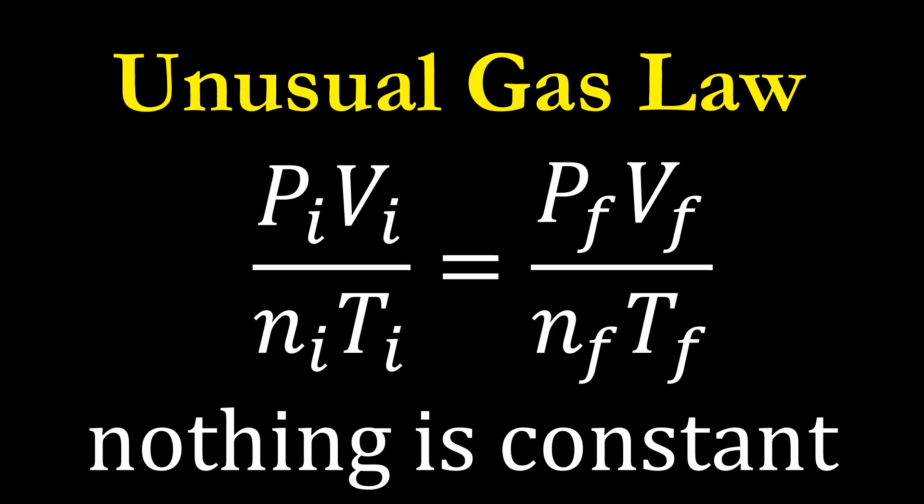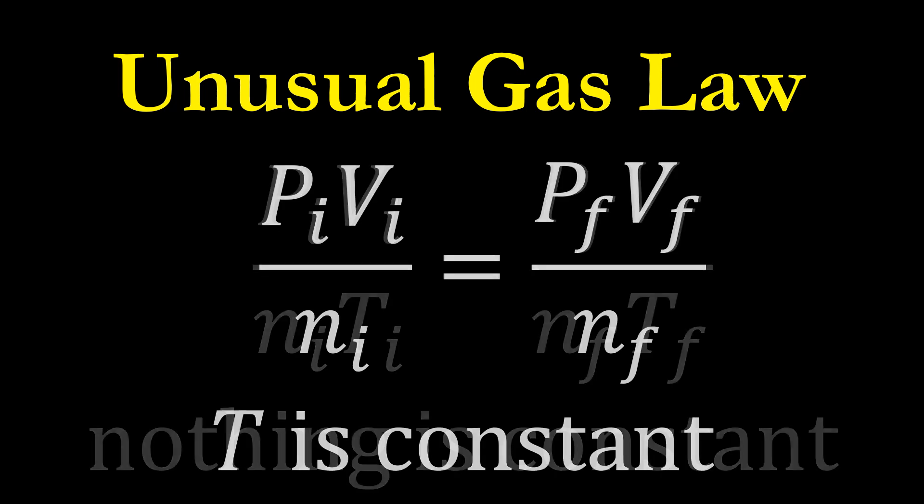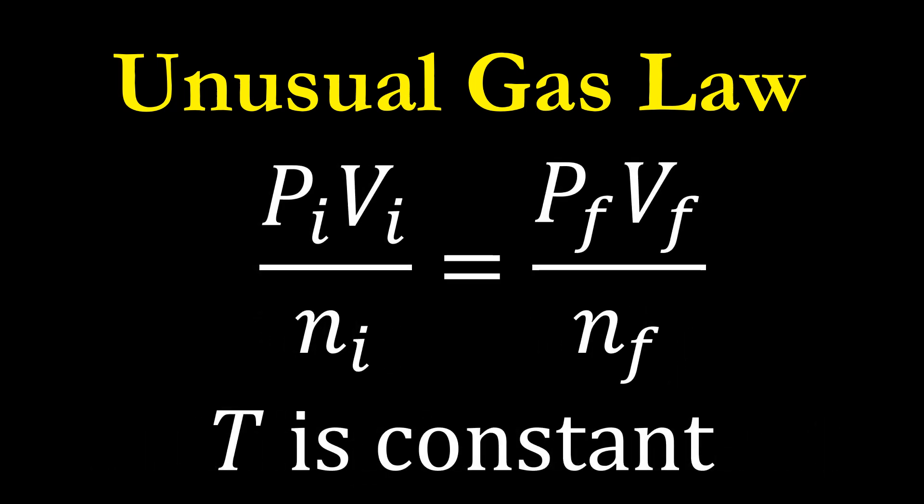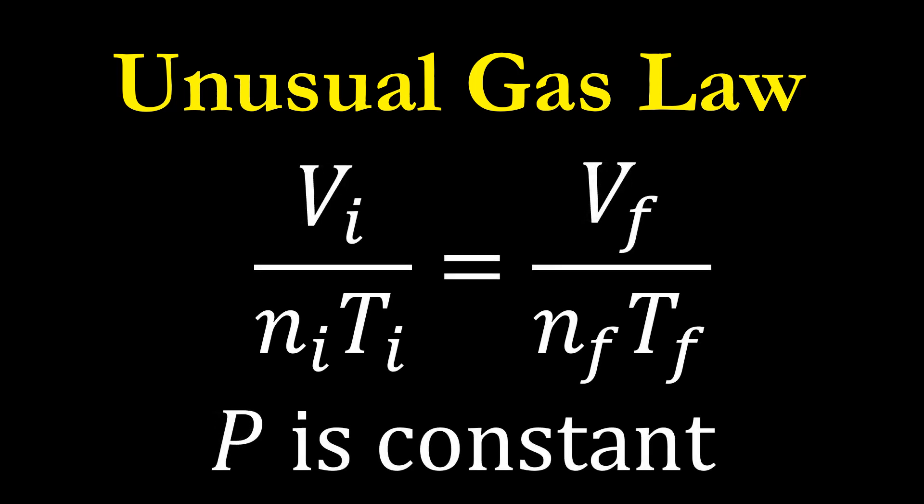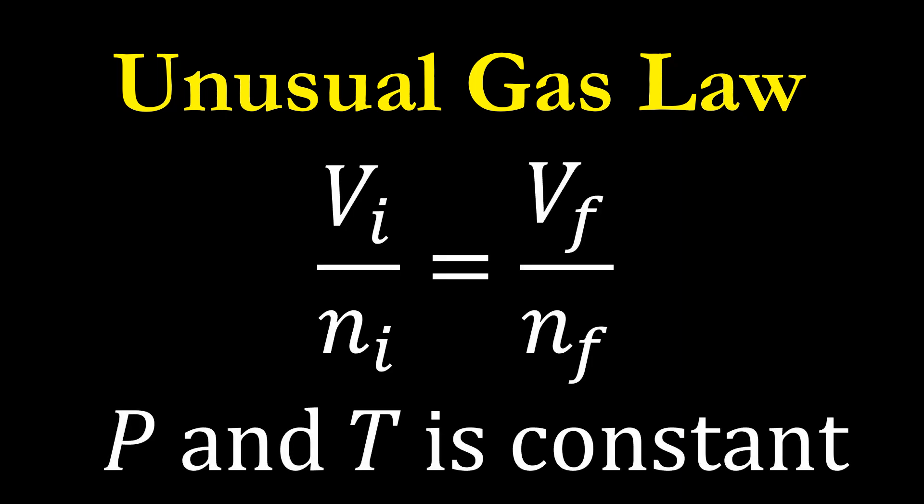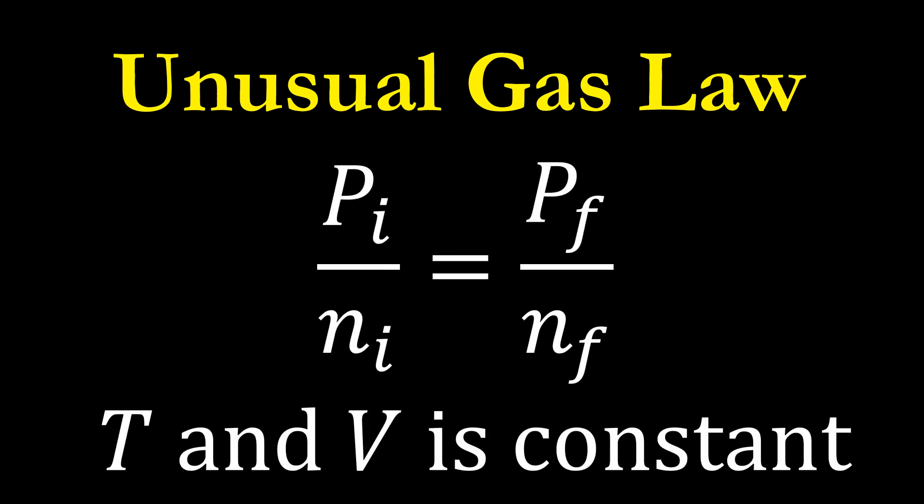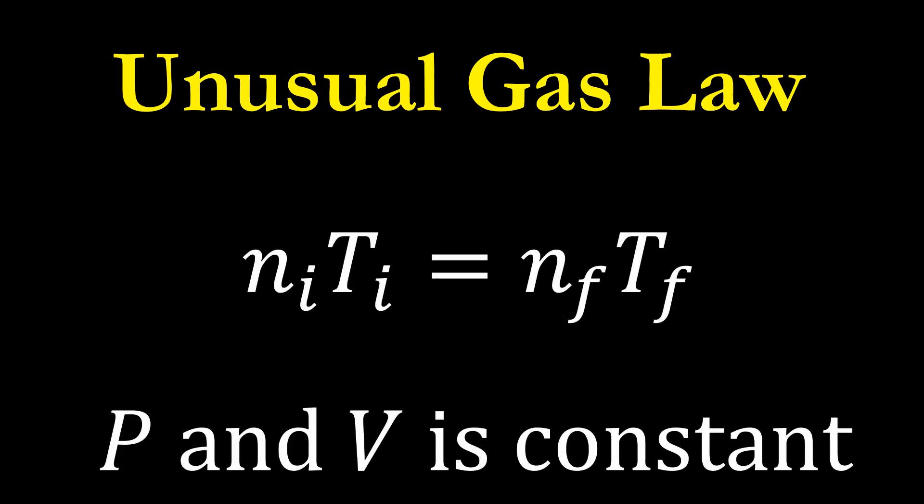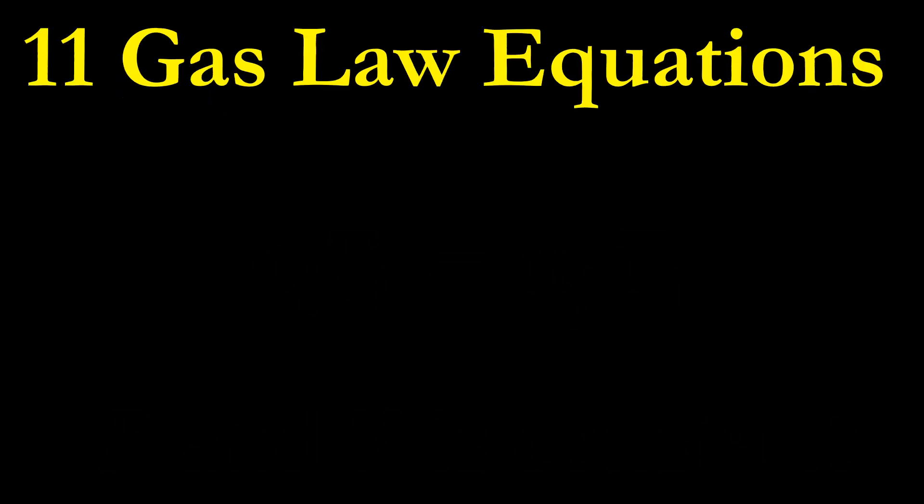Following this procedure, we can come up with some new, unusual gas law equations that typically do not appear in textbooks. There's a set right here where, if nothing is held constant, you can have all four variables. If you have only T constant, here's an equation. V is constant. P is constant. We could derive a few more equations where we hold two variables constant, such as P and T, T and V, and P and V.